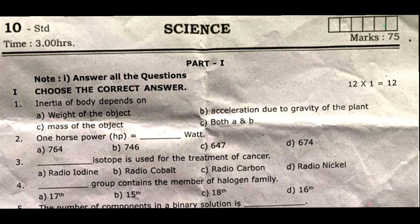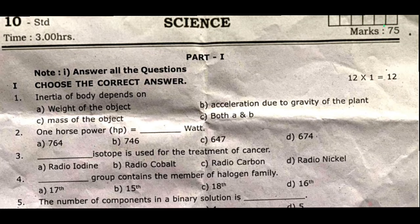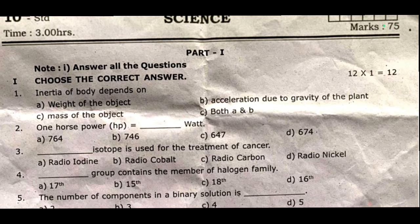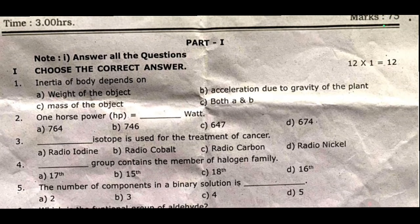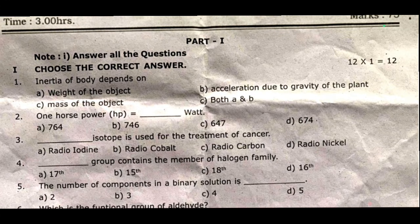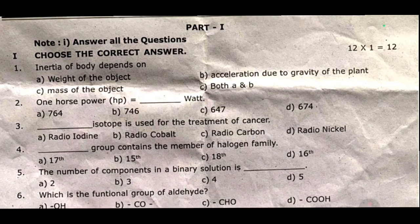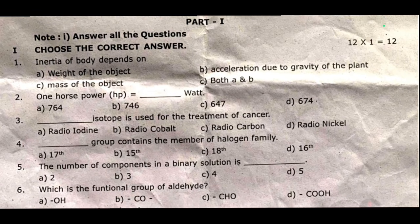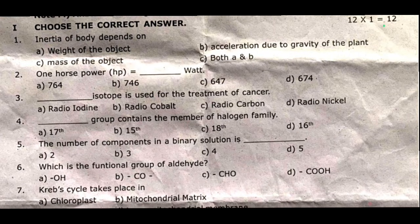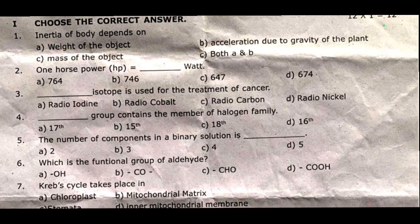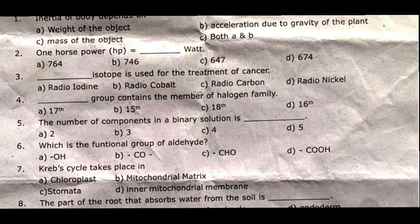You should check the questions. To choose the first one: inertia of a body depends on dash. Second one: 1 Rs power HP equal to dash watt. Third one: dash isotope is used for the treatment of cancer. Fourth one: dash group contains the member of allergen family. Fifth one: the number of components in a binary solution is dash.